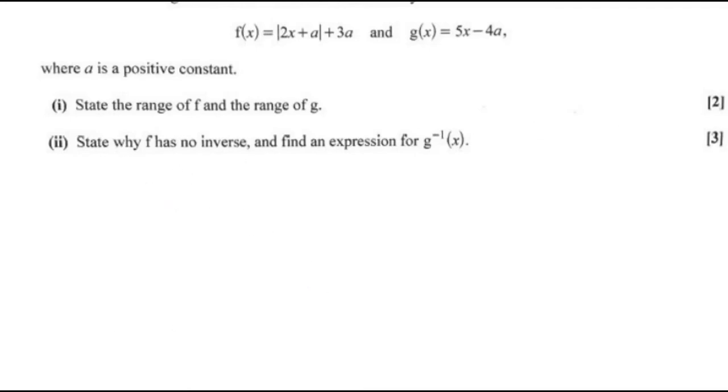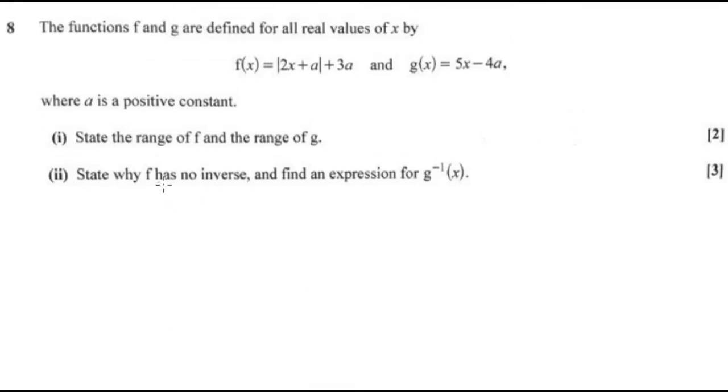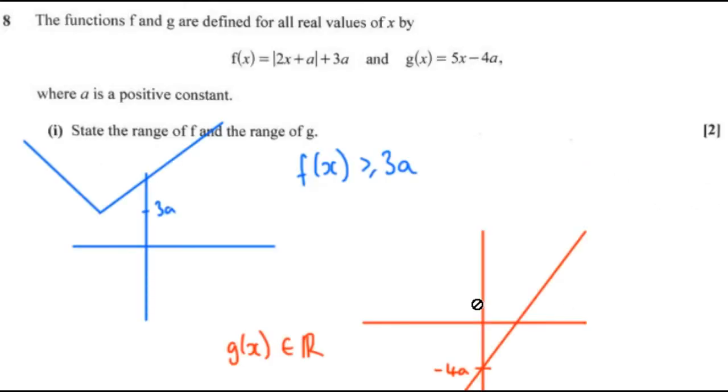Part 2 says to state why f of x doesn't have an inverse. It doesn't have an inverse because it's not a one-to-one function. You can see here that if I draw a straight line across the function, we have two identical outputs for two different inputs. This is an example of a many-to-one function.